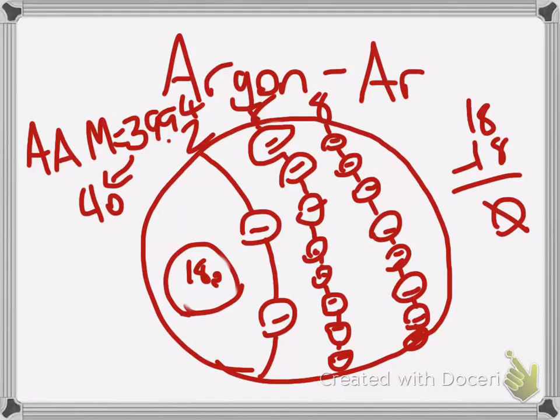Now we're going to subtract the amount of protons we have from the atomic mass, and this gives us 22. So now we know the amount of neutrons we have, which is 22.